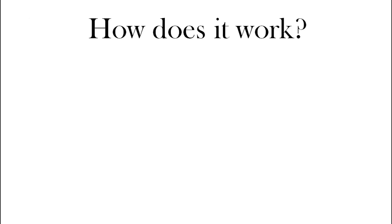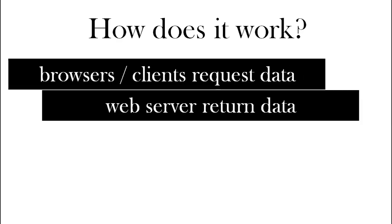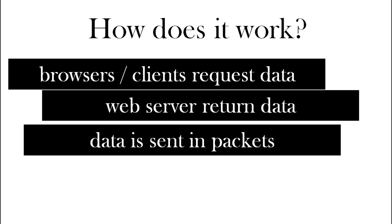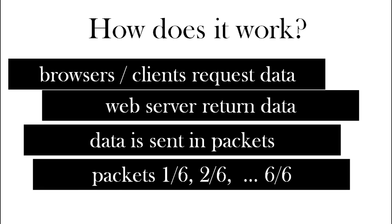So how does this all work? The client requests the data from the browser, and the web server returns the data. The data is sent in packets — it could be split up into different packets. When they're sent, we know there's one of two, two of two, and then your device can put the packets back together again to receive the whole message.